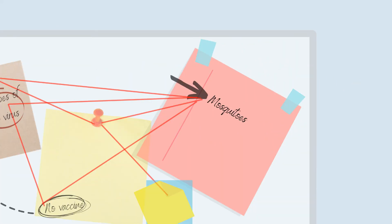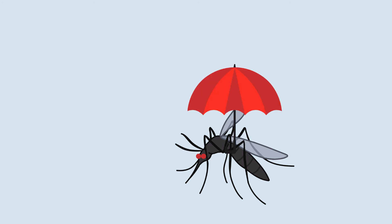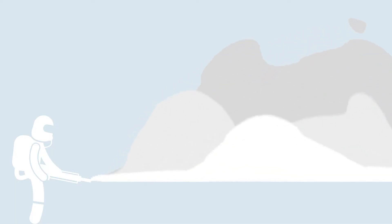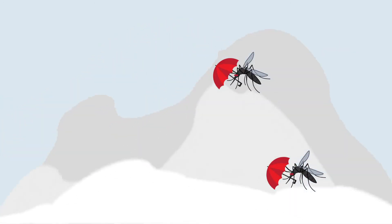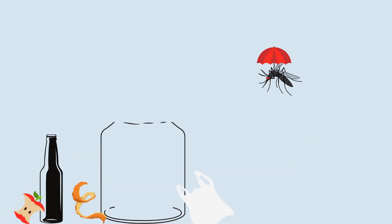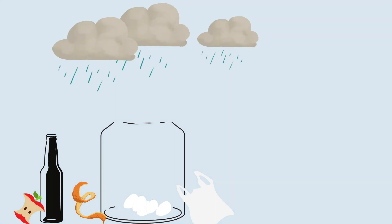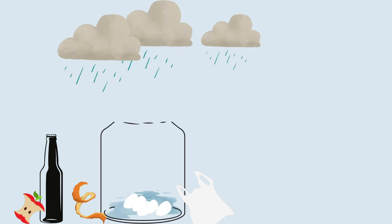Thirdly, mosquitoes — the vector of Dengue virus — are good at resisting harsh living conditions. Mosquitoes are becoming increasingly resistant towards insecticides used during fogging activities. During fogging, non-resistant mosquitoes die off, but some resistant mosquitoes can survive and continue to multiply. Moreover, mosquitoes in urban areas have adapted so that their eggs can survive in dry containers for several months, while new mosquitoes will develop when the containers are filled with water again, such as during rainy seasons.